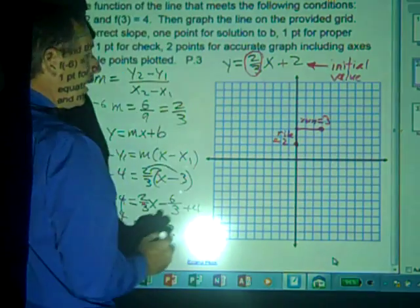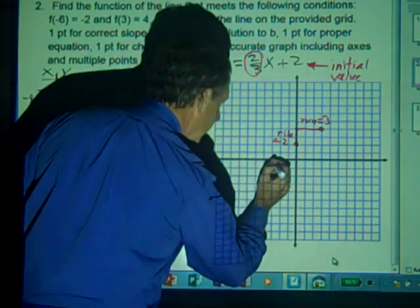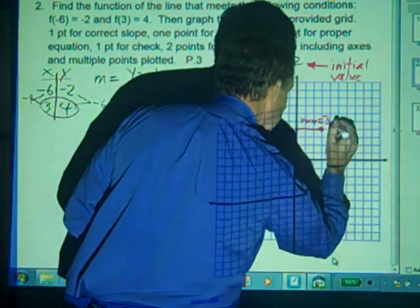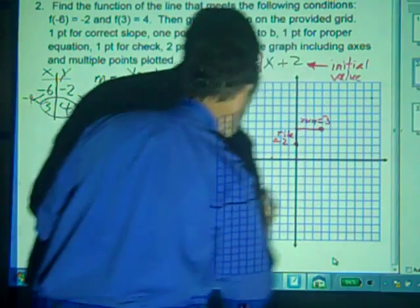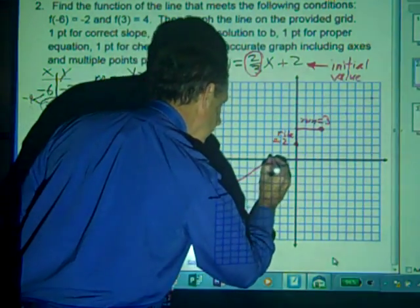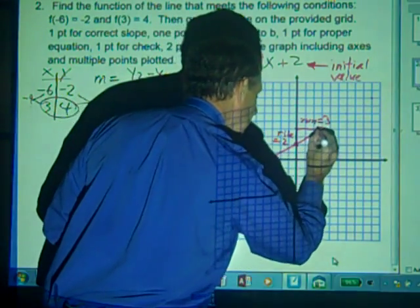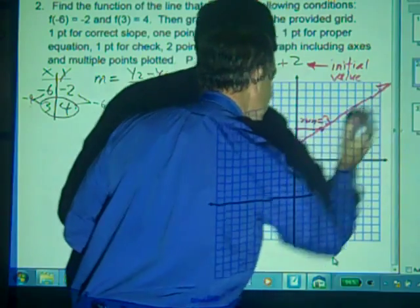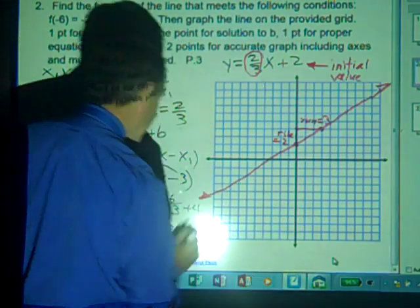And so now we have 2 points, and we're going to use those 2 points and extend them to make a graph that covers the coordinate grid. Okay, we bring a line like this, and so this is our line, the function that we calculated.